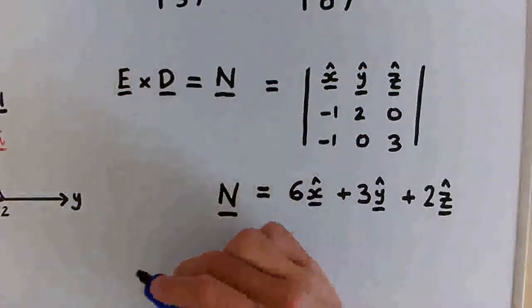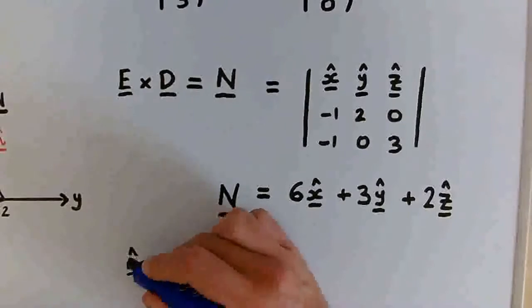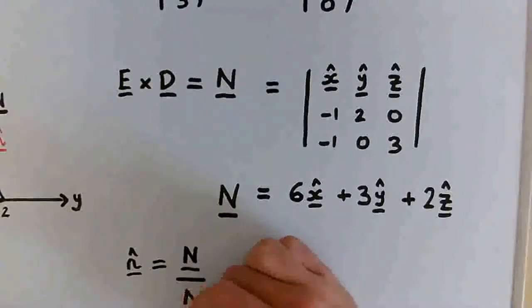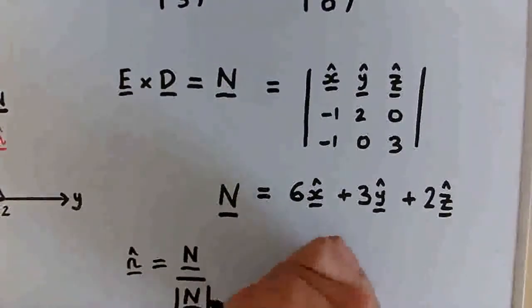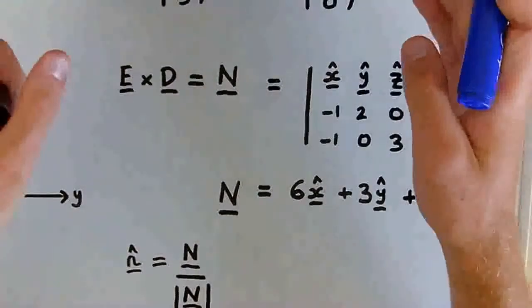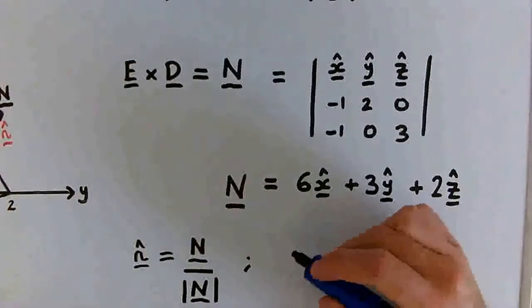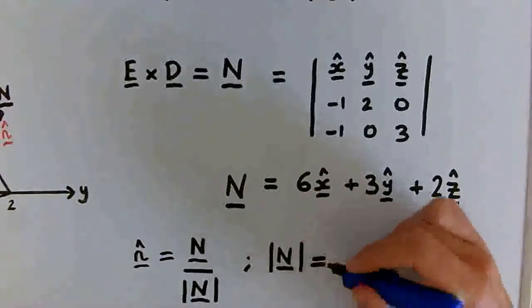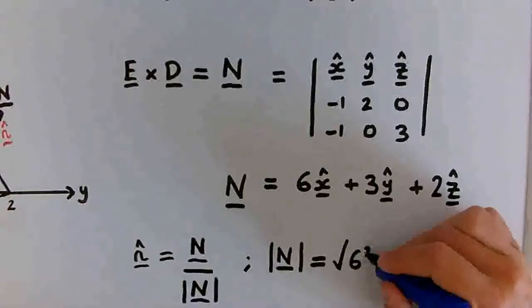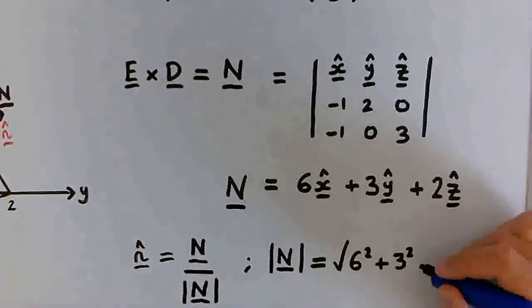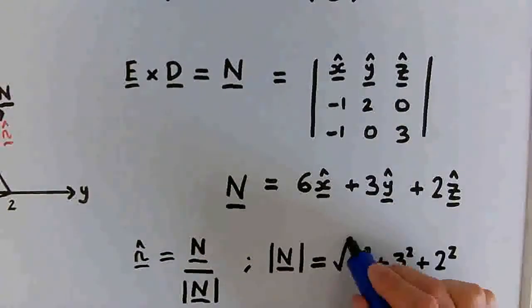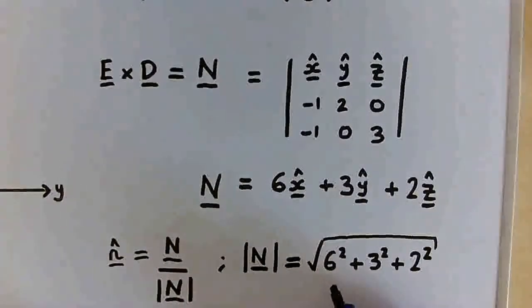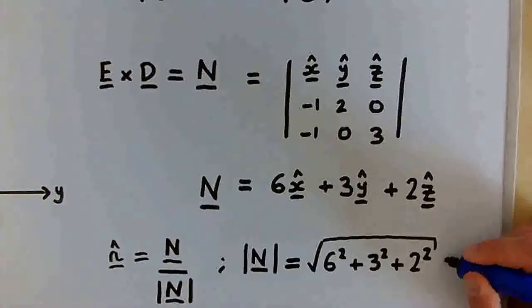So the last step to find the unit normal vector n-hat is to divide the normal vector capital N by its magnitude. That's how unit vectors are defined. So first we work out the magnitude of the normal vector N. And this is just the square root of... which works out as 36 plus 9, 45 plus 4 is 49. So the square root of that is 7.